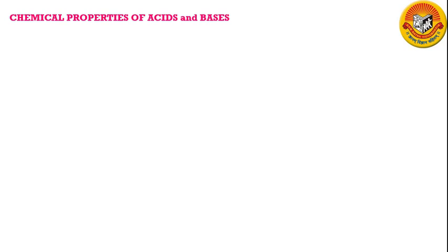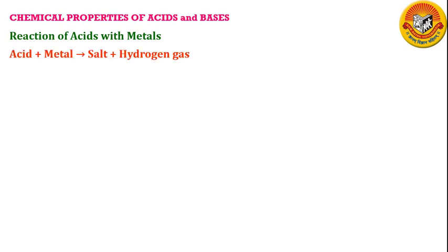Now let us move to the chemical properties of acids and bases. Acid reacts with metals — this is the first chemical property of acids. When acid reacts with metal, it gives us salt and hydrogen gas. For example, when we react hydrochloric acid with zinc, we get zinc chloride plus hydrogen gas.